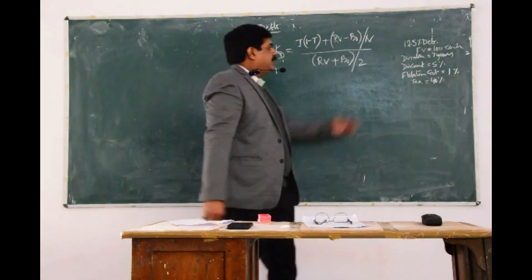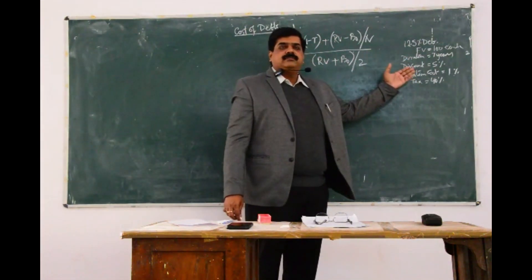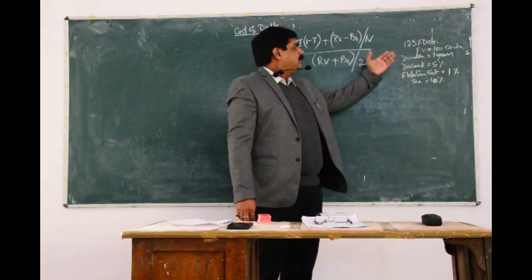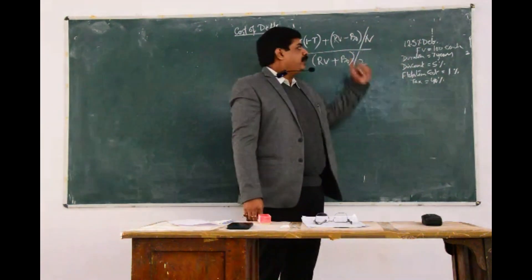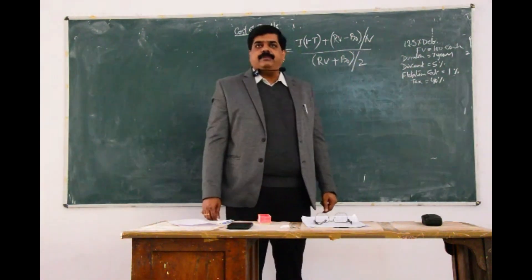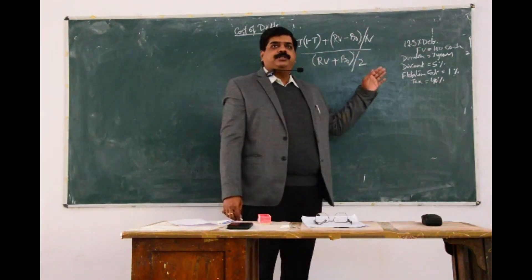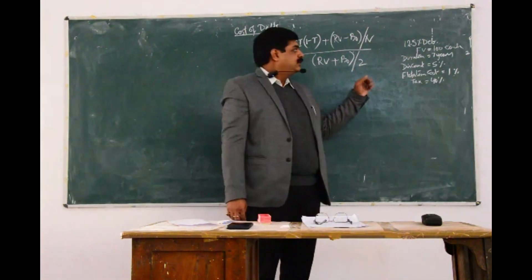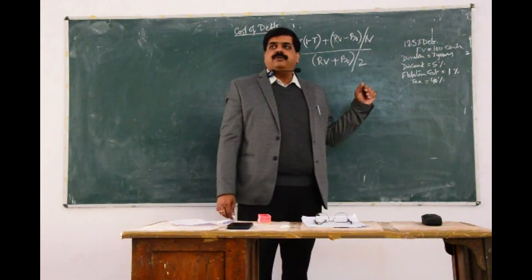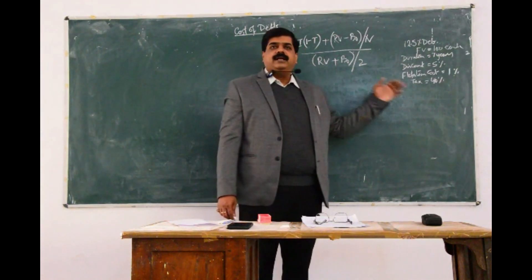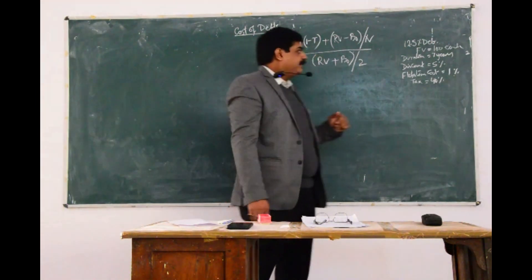Like the example that we have taken, the same example as we have taken in the trial and error method. 12.5% is the interest on the debenture, having the face value of Rs 100 each. The debenture is issued for 7 years, having a discount of 5%, flotation charge as 1%, and tax is given as 40%.